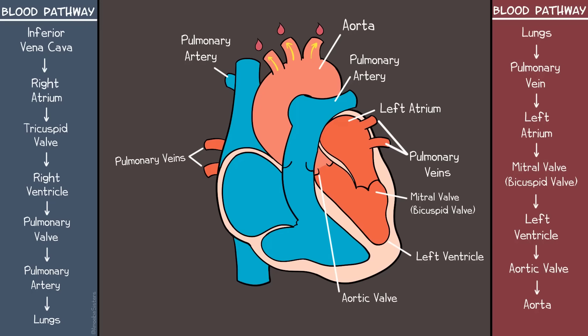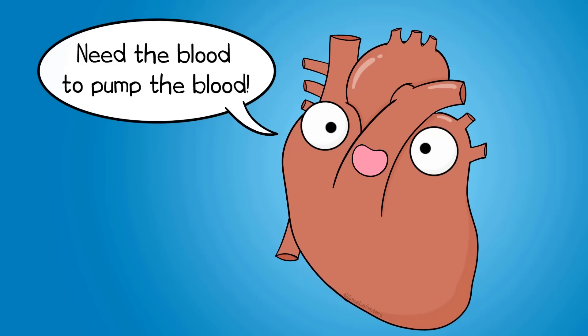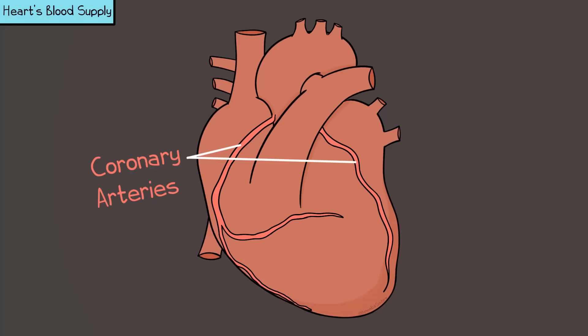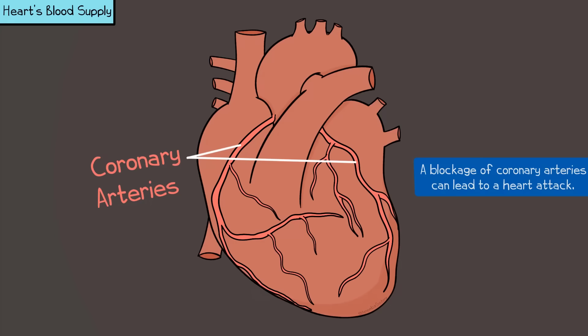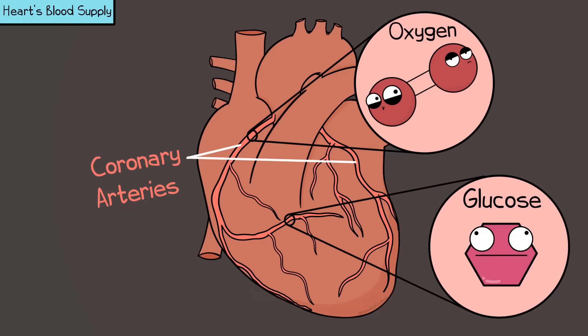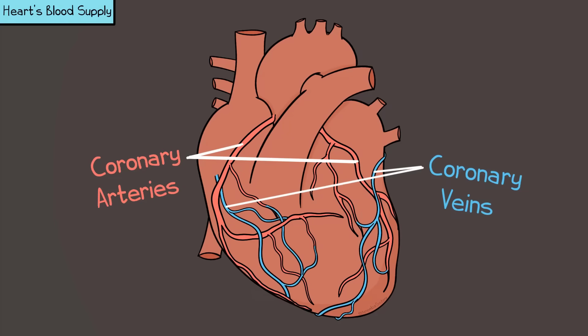The heart also needs its own blood supply for delivery of oxygen and glucose. The heart receives this through coronary arteries, which branch off the aorta and eventually deliver blood into capillaries. These capillaries deliver oxygen and glucose to the heart. Coronary veins then take the deoxygenated blood to the right atrium, where the blood will eventually travel the pathway to become oxygenated again.